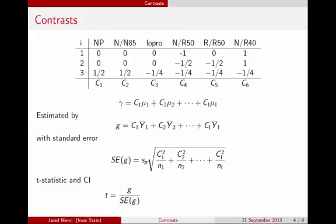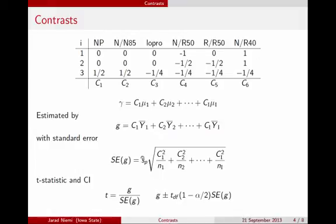With an estimate and a standard error, we can construct our t-statistics and confidence intervals. The t-statistic is just G divided by the standard error of G. The confidence interval is G plus or minus a critical value times the standard error of G. We use the same pooled variance estimate and the same degrees of freedom — N minus I, the total sample size minus the number of groups.